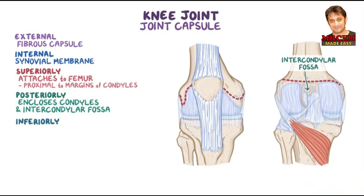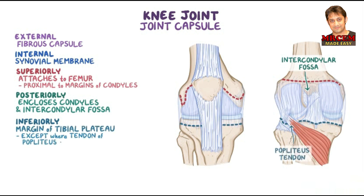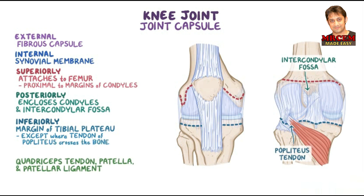Inferiorly, the fibrous layer attaches to the margin of the tibial plateau, except where the tendon of the popliteus crosses the bone. The quadriceps tendon, patella, and patellar ligament replace the fibrous layer anteriorly, and the fibrous capsule is continuous with the medial and lateral margins of these anterior structures.